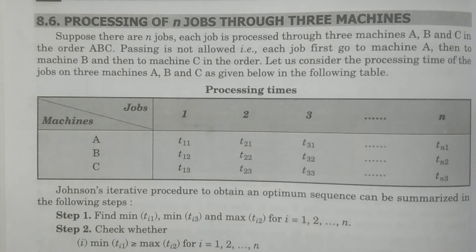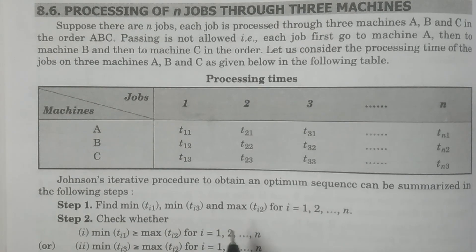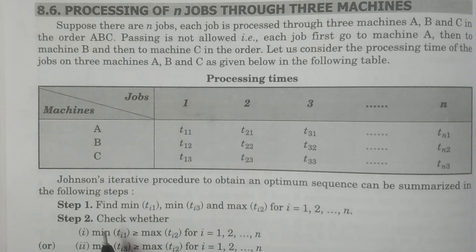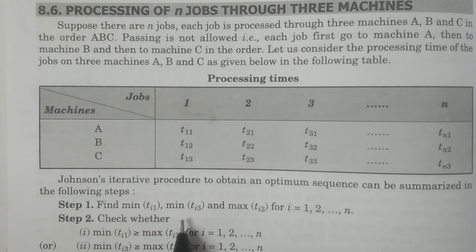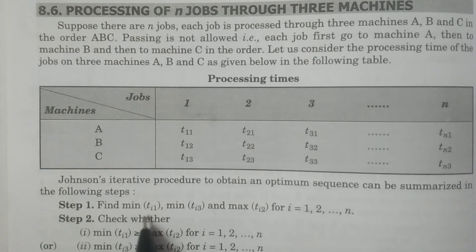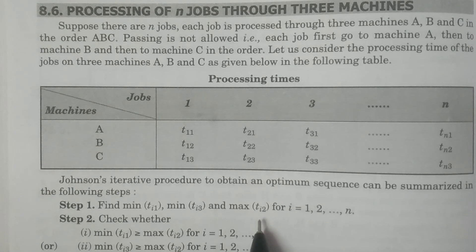Now consider Johnson's procedure to obtain the optimum sequence. In step one, calculate the minimum of ti1 (first machine), the minimum of ti3 (third machine), and the maximum of ti2 (second machine), for all jobs i = 1 to n. So you calculate the minimum processing times for the first and last machines, and the maximum processing time for the second machine.